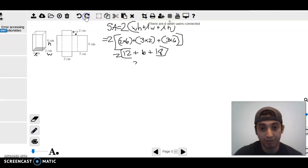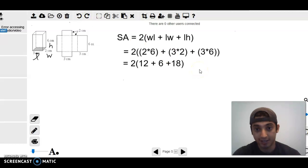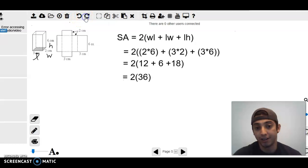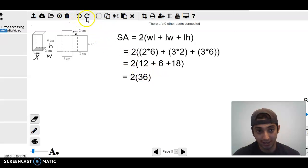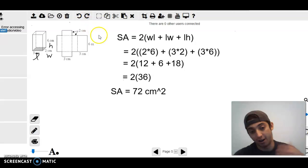Two times six is 12. Three times two is six. Six times three is 18. Just remember to always do what's in parentheses first. That's just basic order of operations. Continue solving. Two times 36. And then our final surface area is 72 centimeters squared.